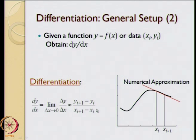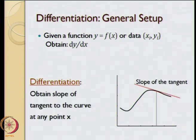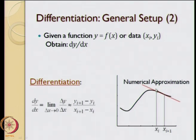That is the overall general setup. If we compare the slope of the actual tangent with the numerical approximation of the tangent, as you can see by comparing the two red lines, the slope is different in those two cases. The numerical approximation is not going to be an exact representation of the differentiation, but it is going to be an approximate representation.